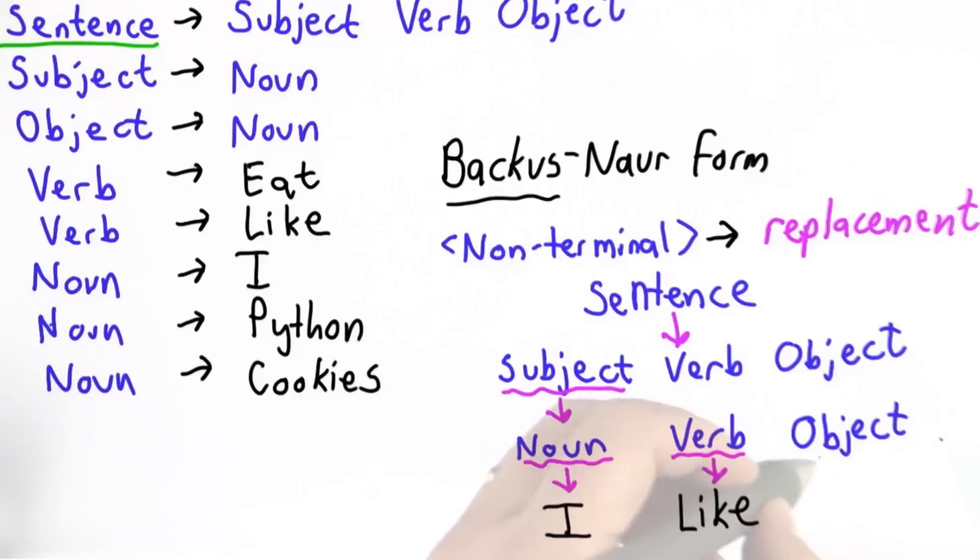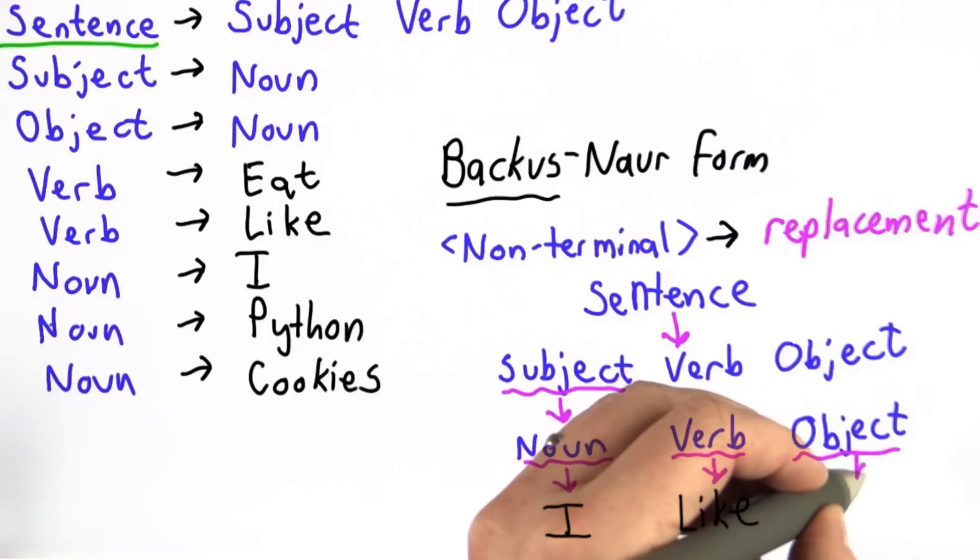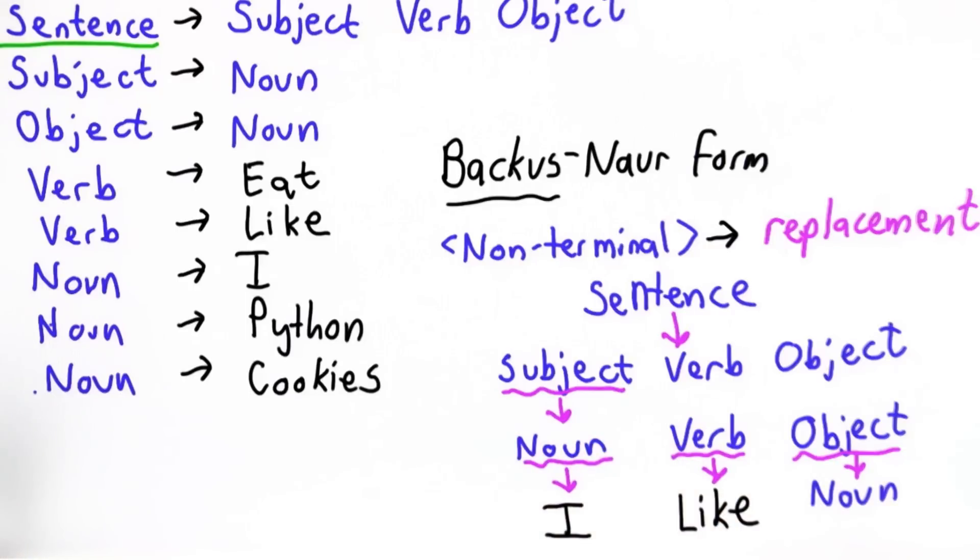Object's a non-terminal, so we have to keep replacing it until we're done. We have one rule for object. We can replace object with noun. Now we have three rules for noun. I'm going to pick the second rule and replace noun with Python.